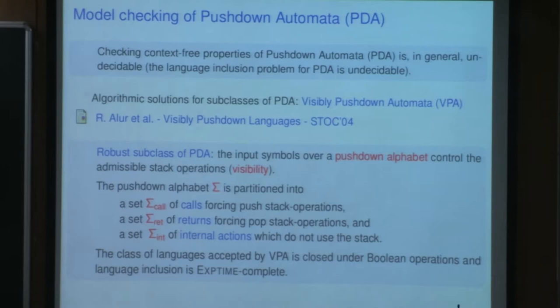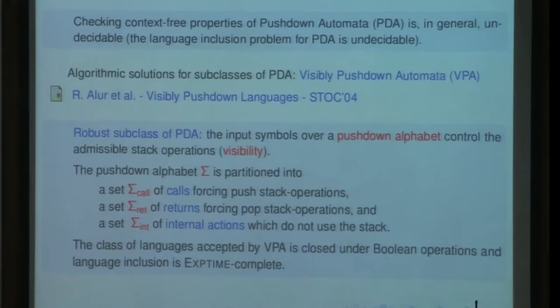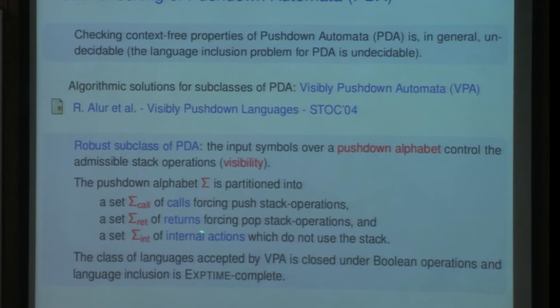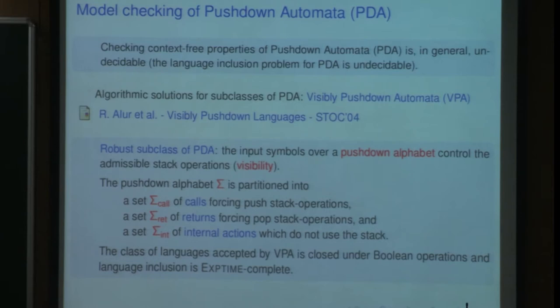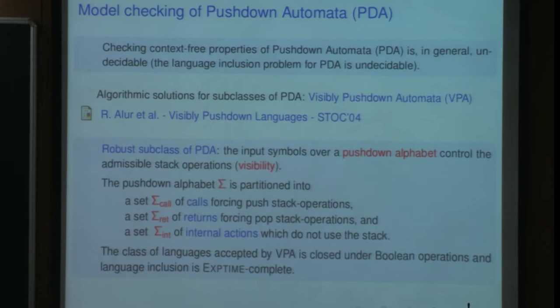Technically this means that we have a push-down alphabet sigma which can be partitioned into three main classes: the set of symbols for calls, which force push-stack operations; the set of symbols for returns, which force the pop-stack operation; and the set of internal actions, which do not make use of the stack. It is known from the literature that the class of languages accepted by a visibly push-down automata is closed under Boolean operations, and the language inclusion problem is EXPTIME-complete.